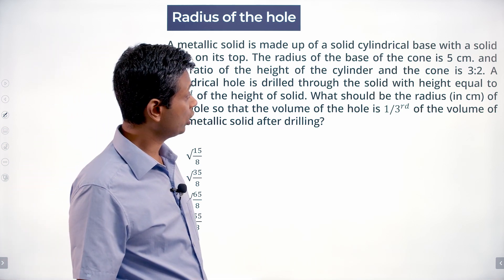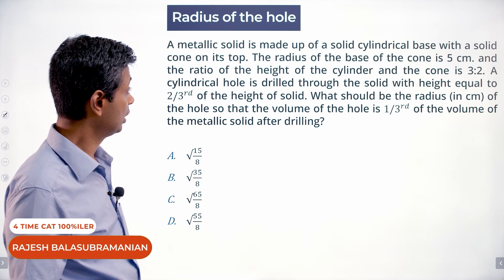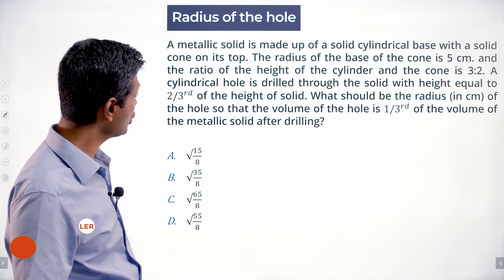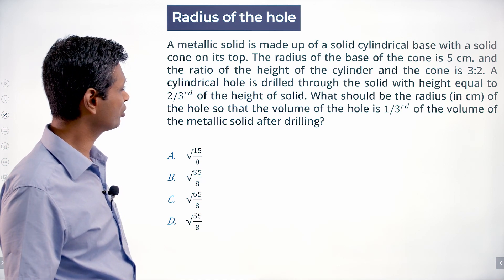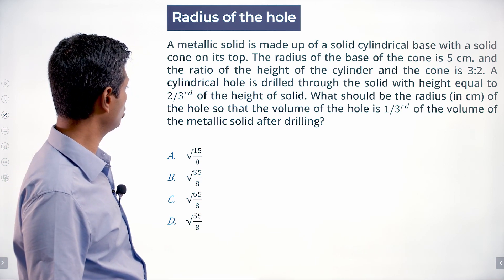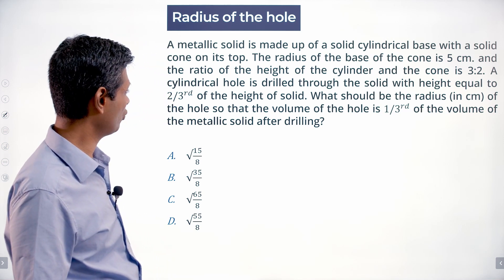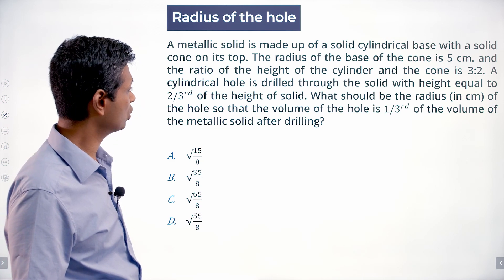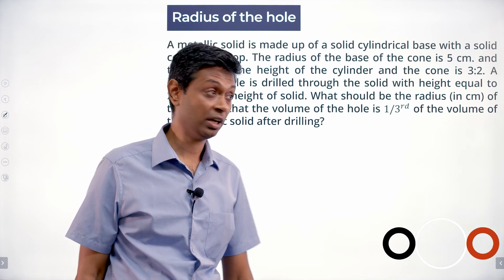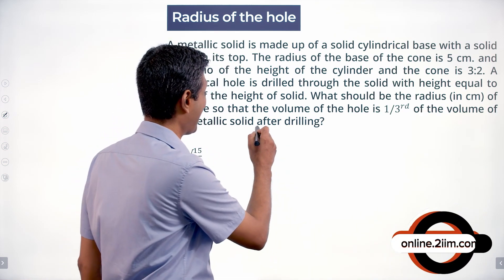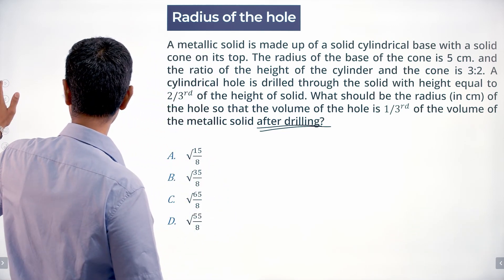A metallic solid is made up of a solid cylindrical base with a solid cone on top. The radius of the base of the cone is 5 centimeters. The ratio of the height of the cylinder to the cone is 3 to 2. A cylindrical hole is drilled through the solid with height equivalent to two-thirds of the height of the solid. The volume of the hole is one-third of the volume of the metallic solid after drilling. It's a very interesting question — I'm going to draw the diagram.